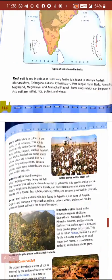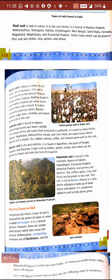Red soil is red in color and is not very fertile. It is found in Madhya Pradesh, Maharashtra, Telangana, Odisha, Chhattisgarh, West Bengal, Tamil Nadu, Karnataka, and Meghalaya. We can grow rice, pulses, and wheat in red soil.